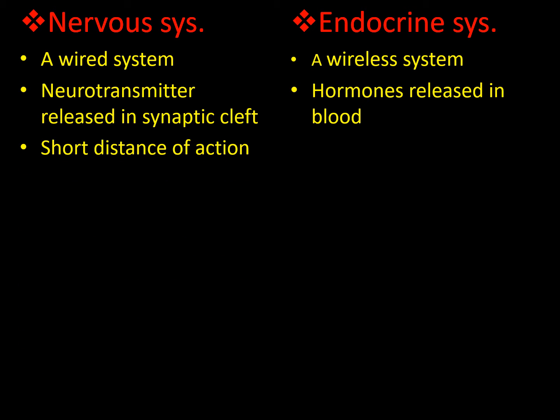The nervous system is mostly concerned with short-distance actions, while the endocrine system is mostly concerned with actions that take place at long distances. For example, the thyroid gland releases thyroxine, which travels via blood at long distances to show its effects at almost all body tissue cells.